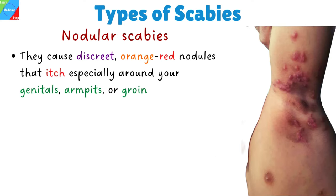Nodular scabies is the other type. They cause discreet, orange-red nodules that itch, especially around your genitals, armpits, or groin.